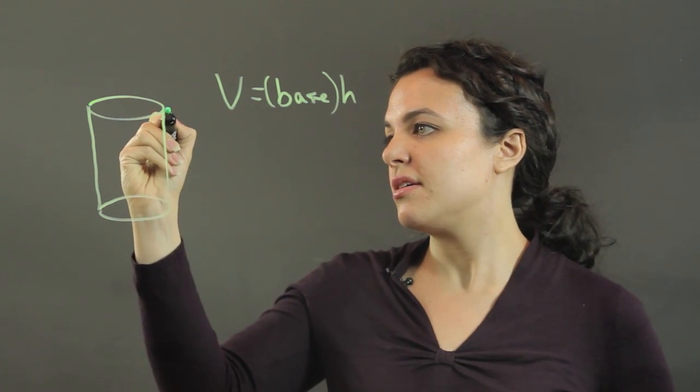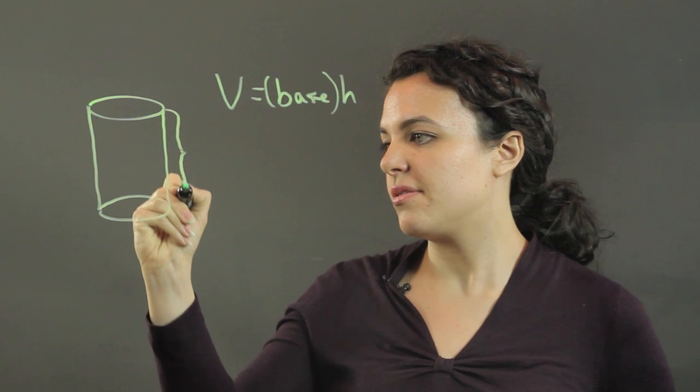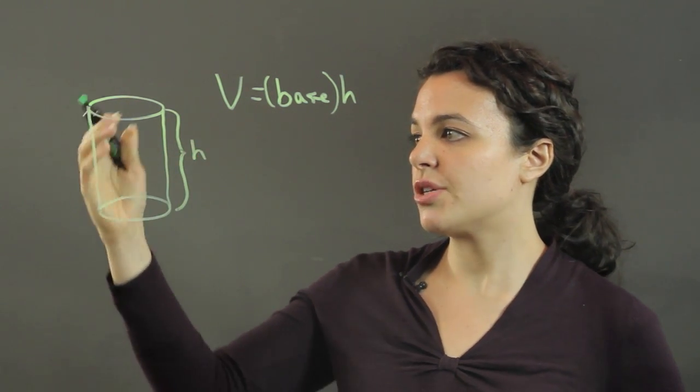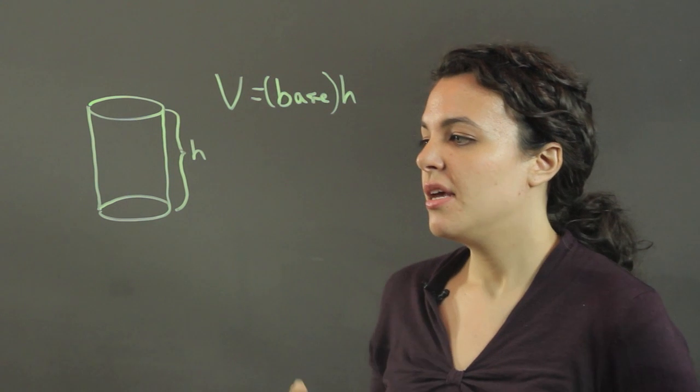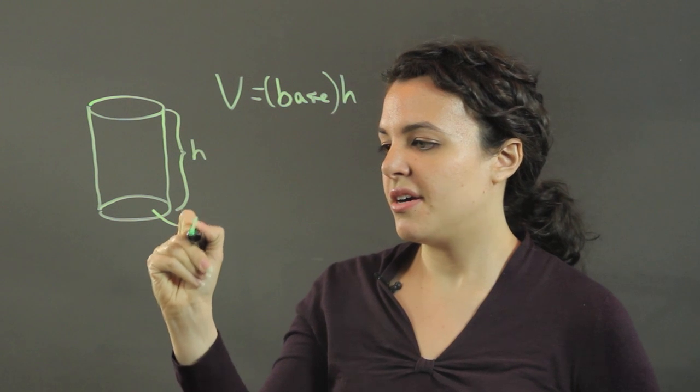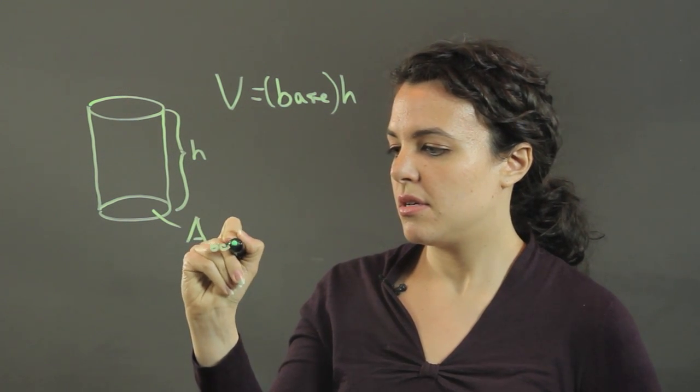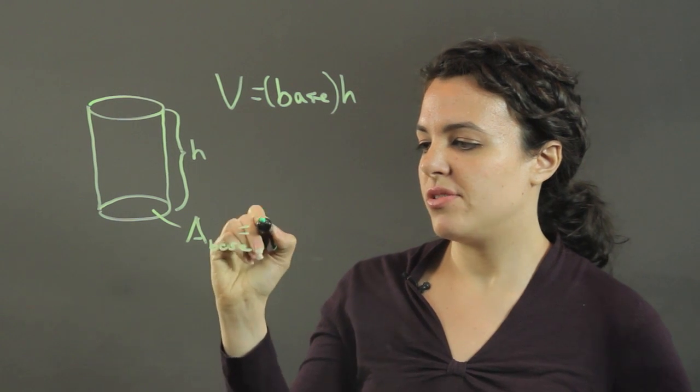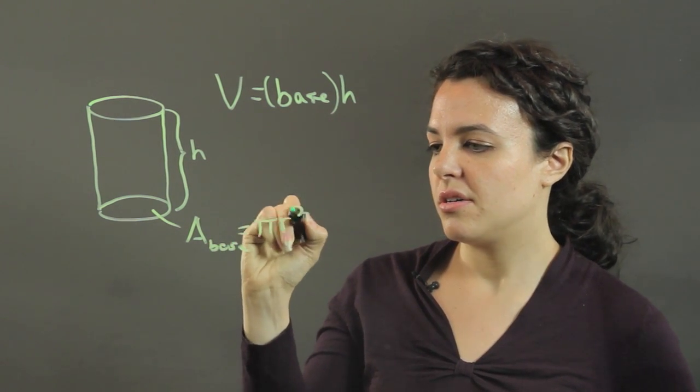This would be the height right here, the actual height of the cylinder. Now the base is a circle, so the area of the base can be found using pi r squared.